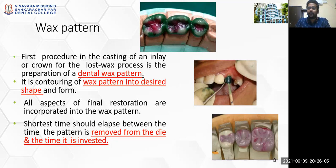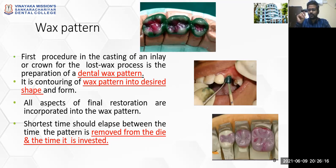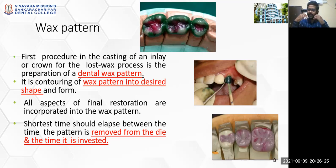Wax pattern fabrication can be of different types. You can do this pattern fabrication either directly intraorally — mainly done in cases of an inlay or when planning to give a cast post — where you take a direct wax pattern from the intraoral cavity. Sometimes you do it in the laboratory, slowly adding wax in sections in increments to get the anatomic contour that you are planning to give for the prosthesis.